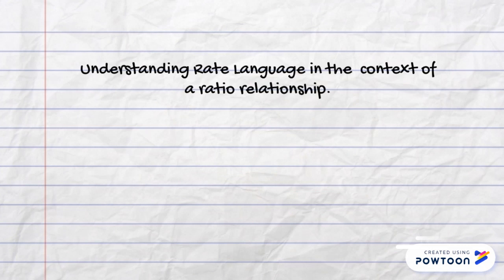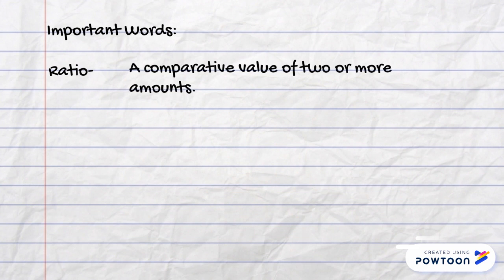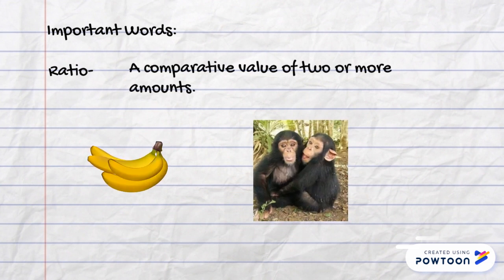Today we're going to work on understanding rate language in the context of a ratio relationship. An important word to know is ratio. Ratio means a comparative value of two or more amounts. If we had four bananas to two monkeys, the ratio would be four to two.